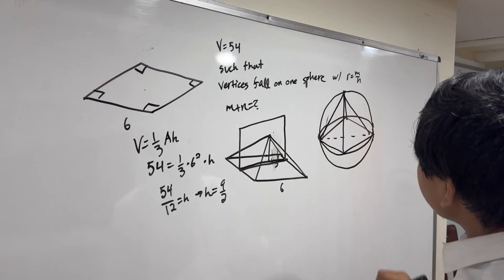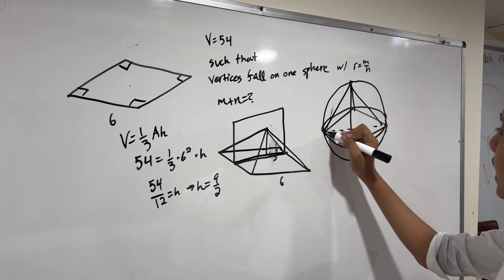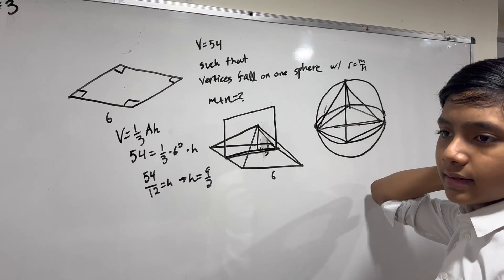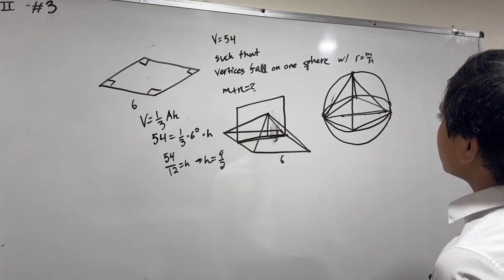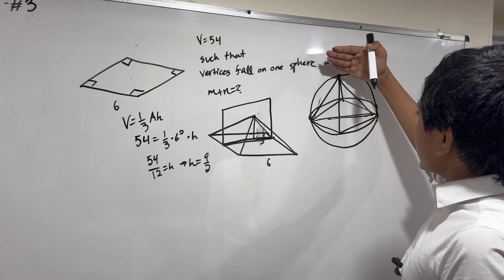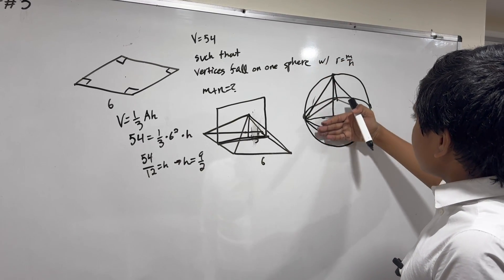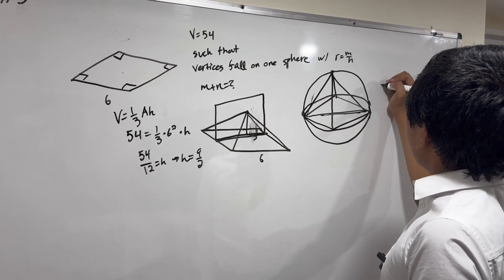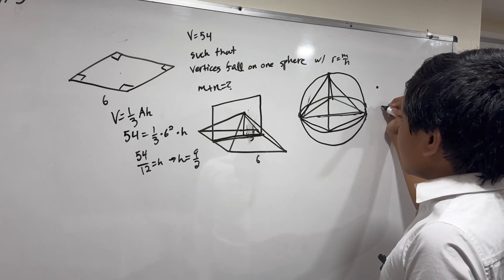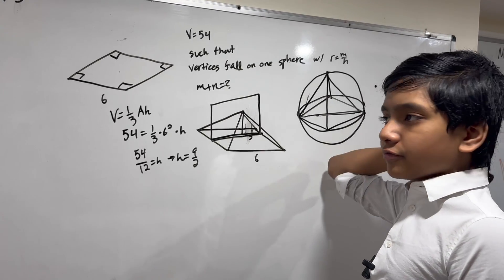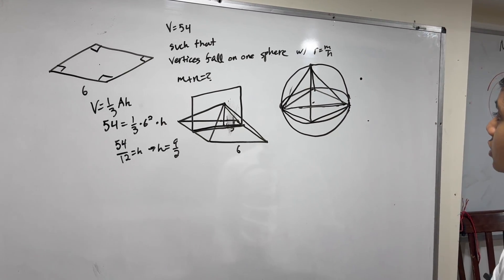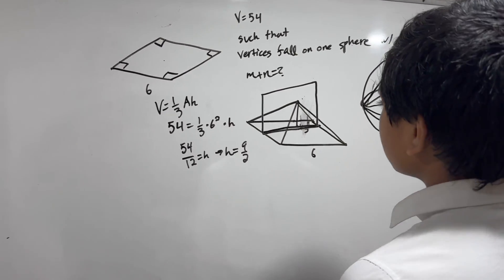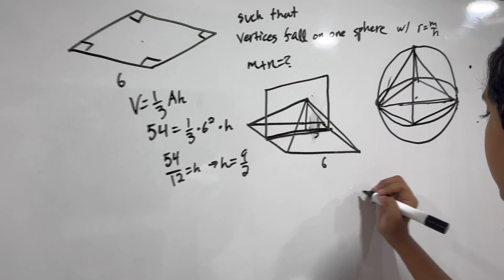Now keep in mind that this diagonal is not exactly the diameter, it could be just a chord. So that's why I'm going to take a cross section over here that goes through both the center of the sphere and the center of the base of this pyramid.